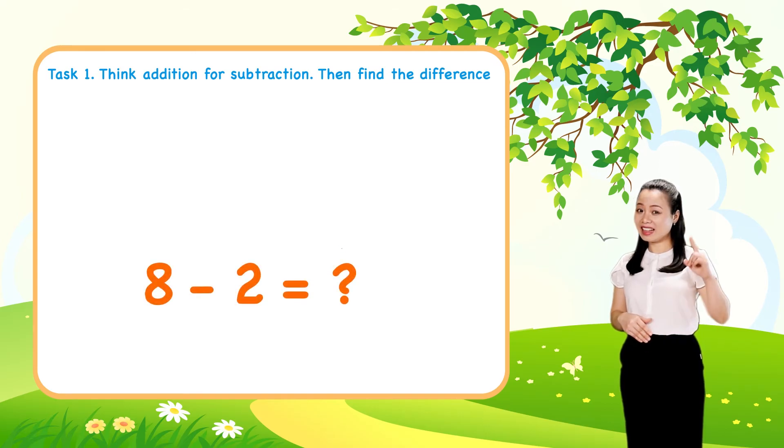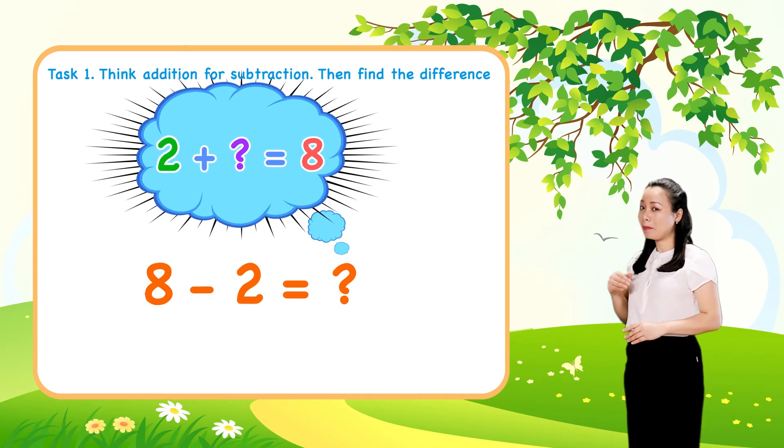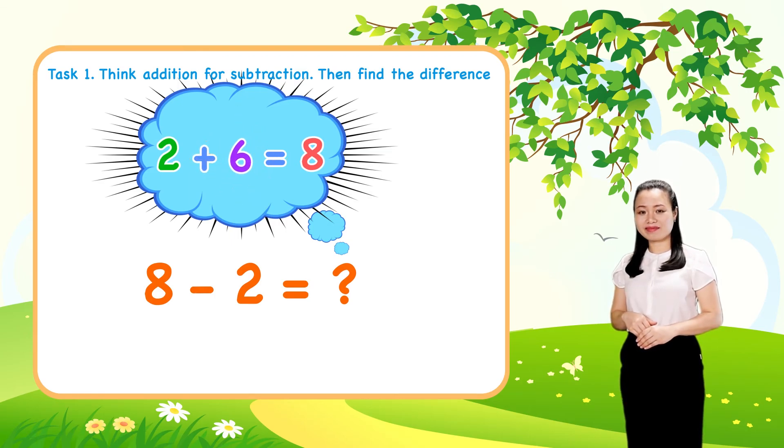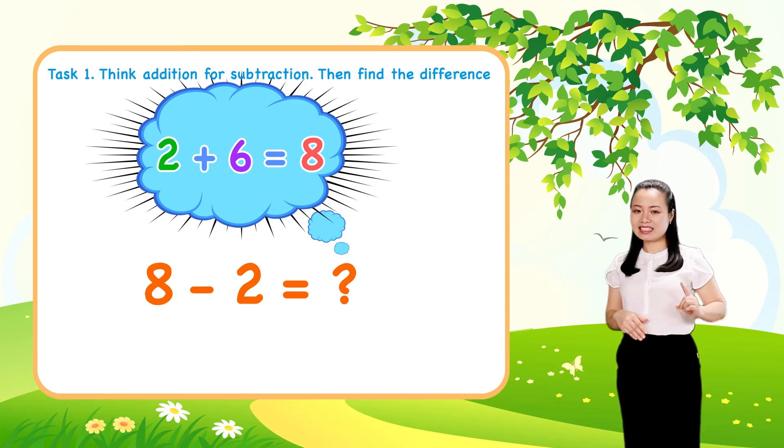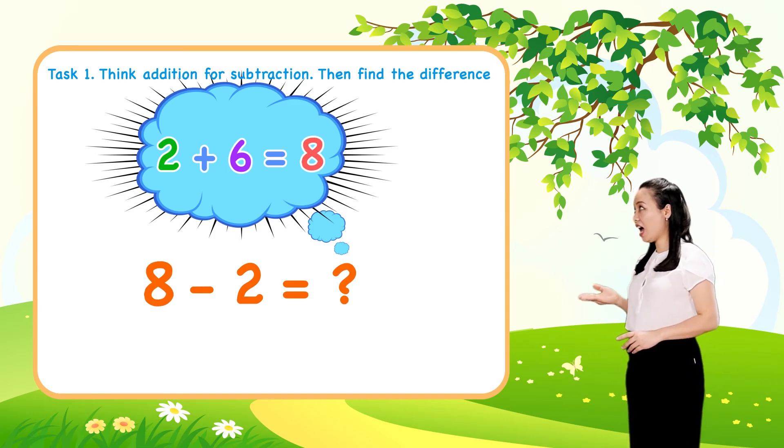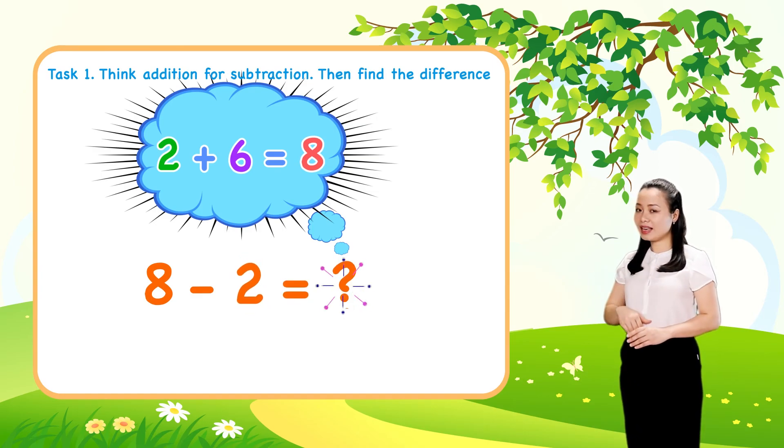The last one, think 2 plus 6 equals 8. So 8 minus 2 equals 6.